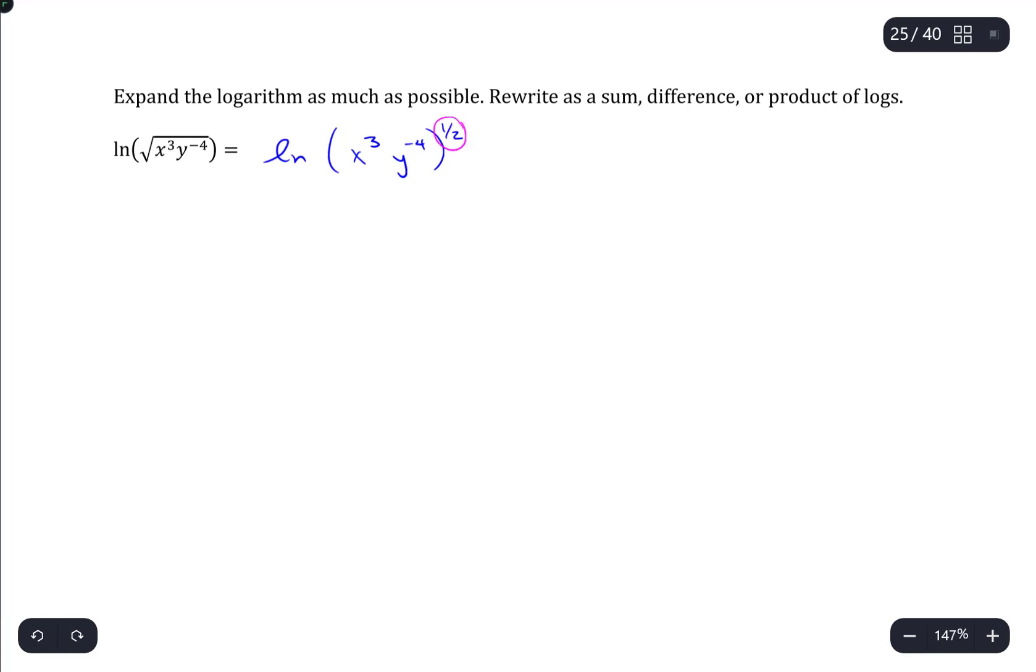Then anytime I have an exponent on the argument of a logarithm, I can pull that out as a constant multiplier. So this would be one-half times the natural log of x cubed times y to the negative fourth.